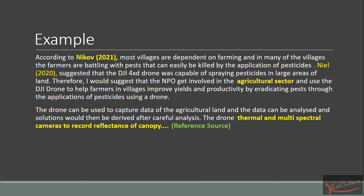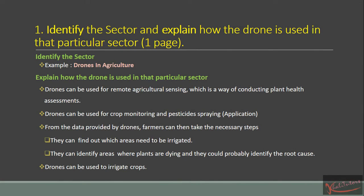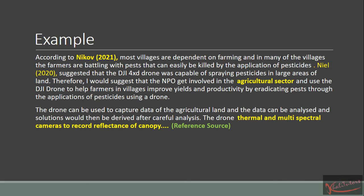From that paragraph I've actually answered a number of the questions asked. We've identified the sector, and I've given reasons for choosing the agricultural sector — using reference material to support why I think the agricultural sector is where the NPO should focus. Make sure you give reasons for whatever you choose, and having literature support makes your argument stronger. However, we haven't yet answered the second part: explain how the drone is used in that particular sector.